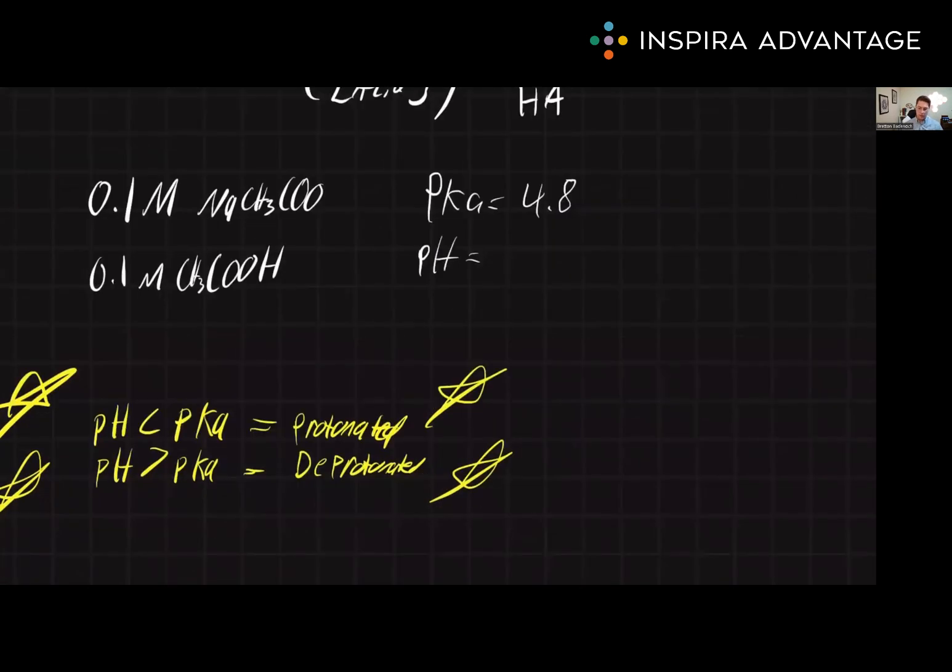Let's do an example of this. Let's say we have a buffer solution of 0.1 molar acetic acid and 0.1 molar sodium acetate. And we want to figure out what is the pH here? Well, we know the pKa of acetic acid is 4.8. So let's try and solve this using the Henderson-Hasselbalch equation. Give this a second and try on your own first.